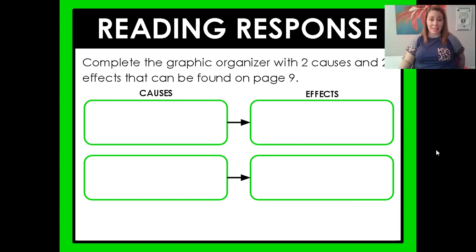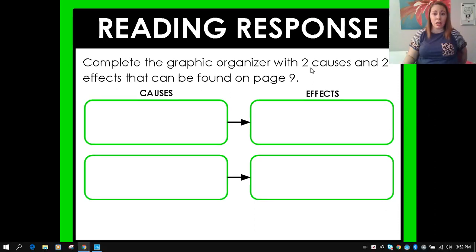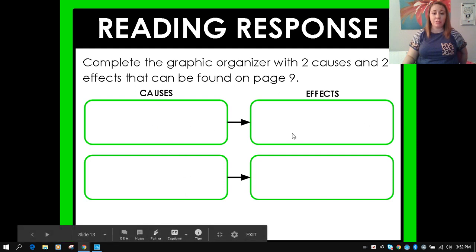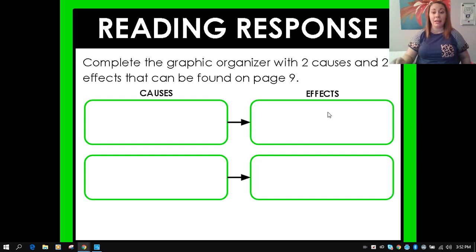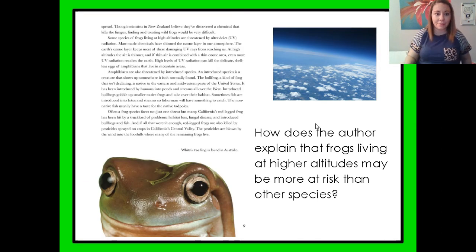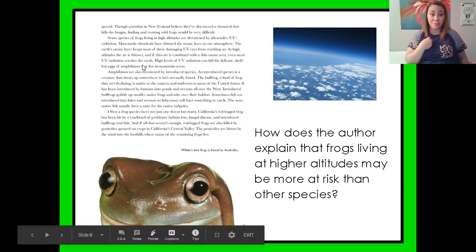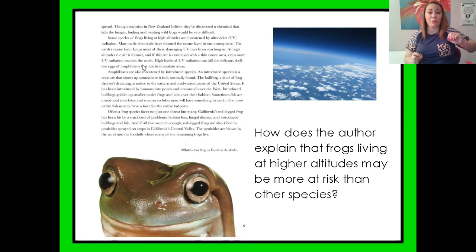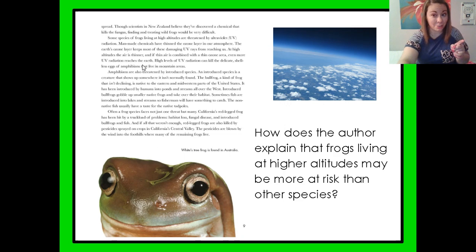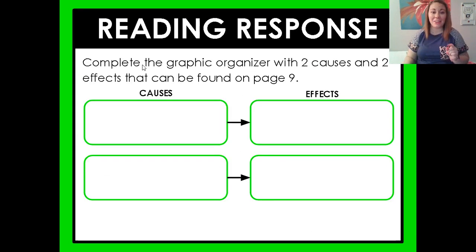Your reading response today is to complete a graphic organizer with two causes and two effects that can be found on page nine. You'll put two causes and two effects — the effect is going to be the result of the cause, what happened because of it. You can go back and look at page nine, and I have included that in the Seesaw activity. You can look back at this page or go back and re-listen to Miss Wagers reading it for you so you don't have to read it on your own. You're listening or looking for two causes and effects — what happens and why. Have a wonderful day and I will see you all later. Bye.